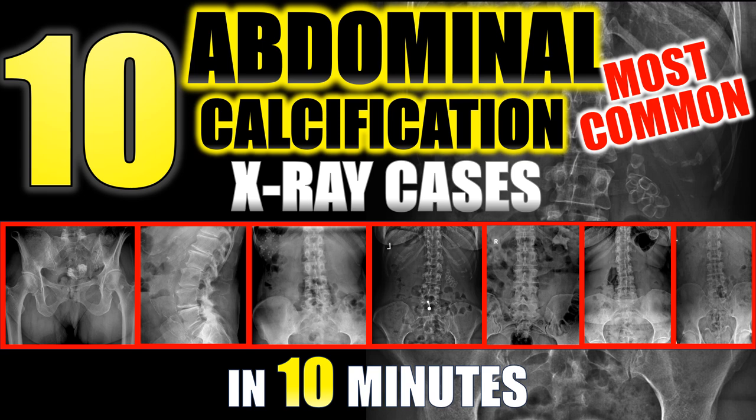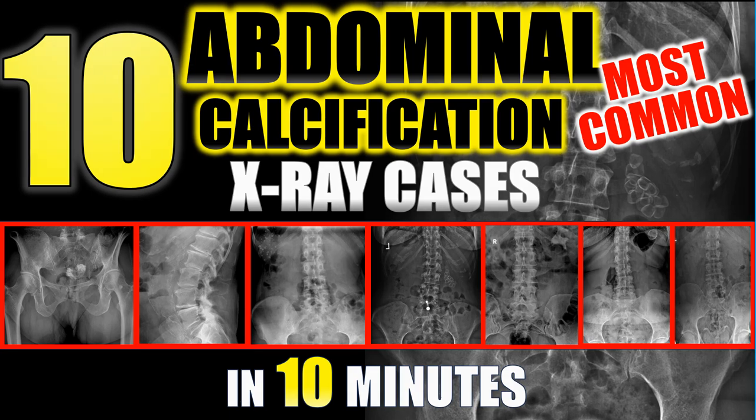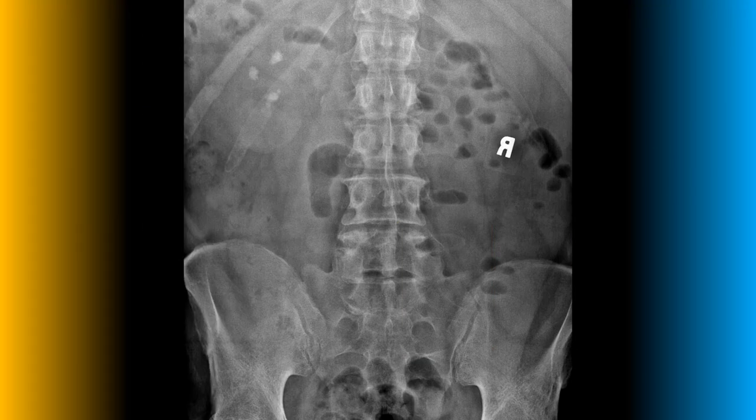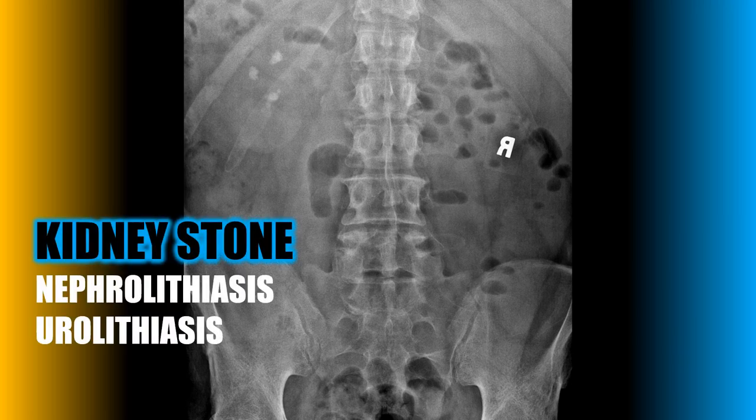Welcome to x-ray review. In this video we're going to go through the 10 most common abdominal calcifications seen on x-ray. Let's start with one of the most common: a kidney stone, often referred to as nephrolithiasis or urolithiasis.